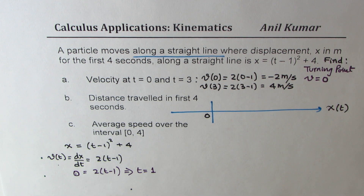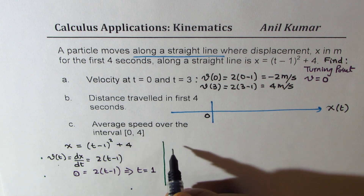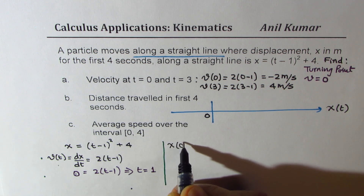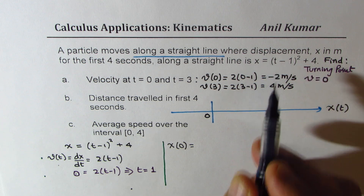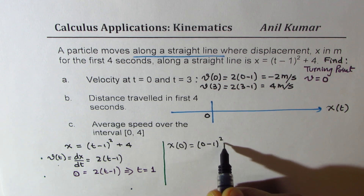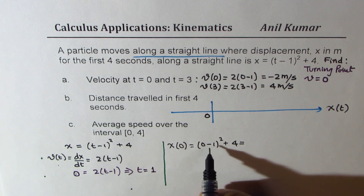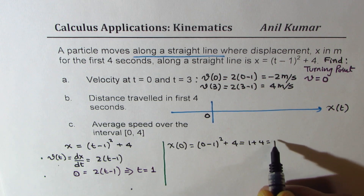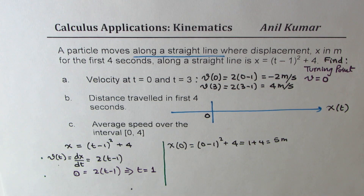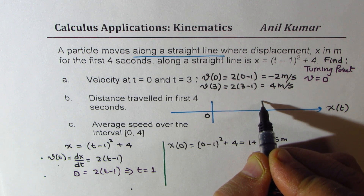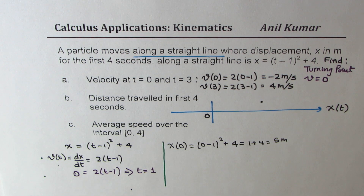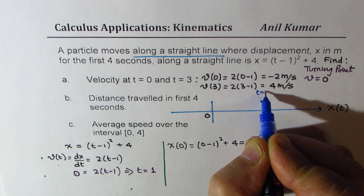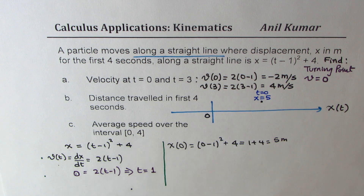At t equals 0, what is the displacement? Substituting 0 into the formula — 0 minus 1 whole square plus 4 — that is 1 plus 4, which is 5 meters. So at t equals 0, this is the starting point, and the object is 5 units away from the reference point.